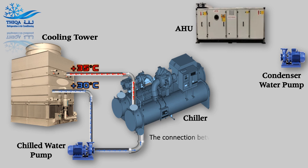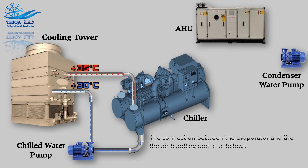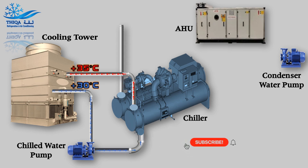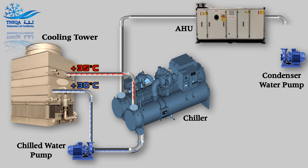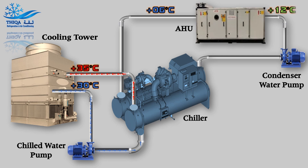The connection between the evaporator and the air handling unit is as follows: the water entering the air handling unit (AHU) is at 6 degrees Celsius. After the AHU exchanges heat, the water exits at 12 degrees Celsius and then proceeds to the evaporator for cooling. This cycle is repeated continuously.